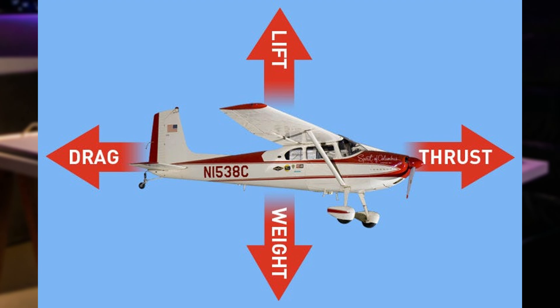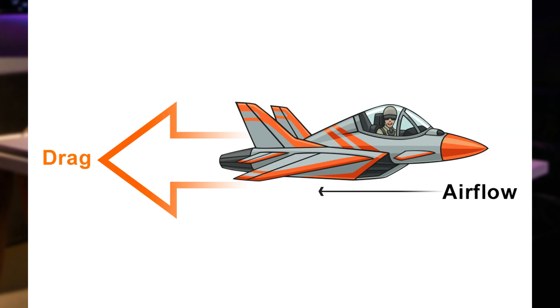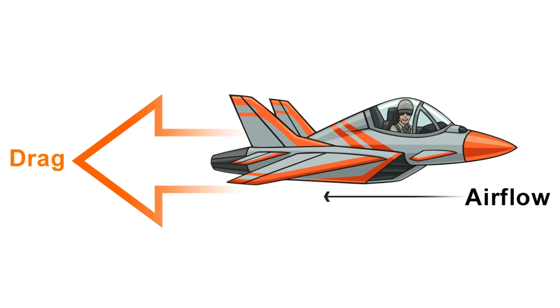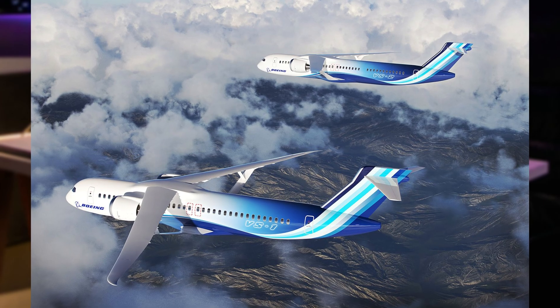The third force is drag, which slows the plane down. As the airplane moves forward, it encounters drag — the resistance of air against the aircraft's movement. Drag is caused by two main factors: friction drag, which is air rubbing against the surface of the plane, and pressure drag, which is the difference in air pressure in front of and behind the aircraft. Engineers design airplanes to minimize drag by using sleek aerodynamic shapes, allowing them to fly more efficiently. However, some amount of drag is always present.